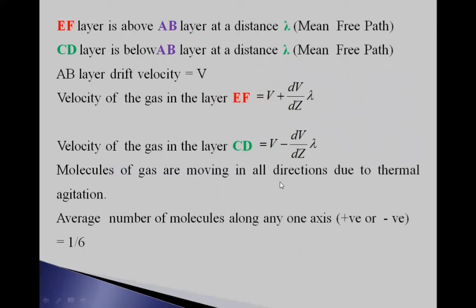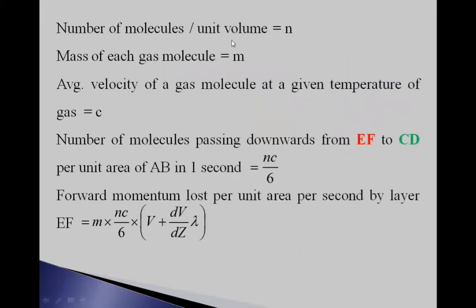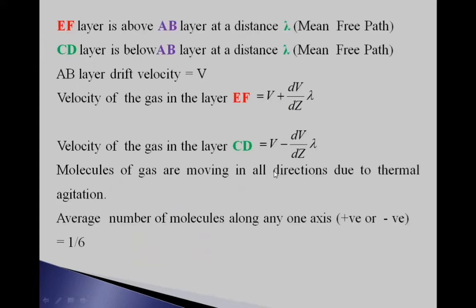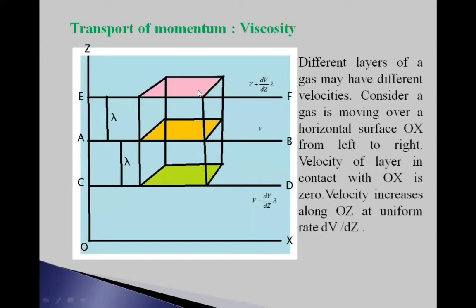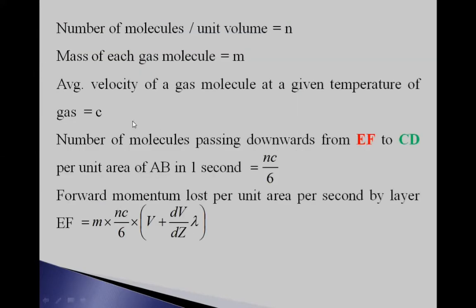Molecules of gas are moving in all directions due to thermal agitation. The average number of molecules moving along any one direction — positive or negative — is 1/6. The number of molecules per unit volume is N, mass of each molecule is M, and C is the average velocity at a given temperature. The number of molecules passing downward from EF to CD layer per unit area of AB per second is Nc/6. So the forward momentum lost per unit area per second by layer EF is M·(Nc/6)·(V + (dU/dZ)·λ).